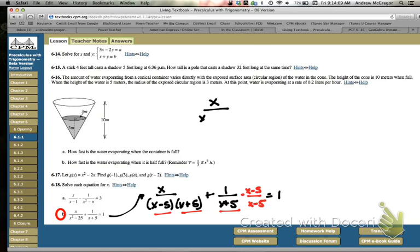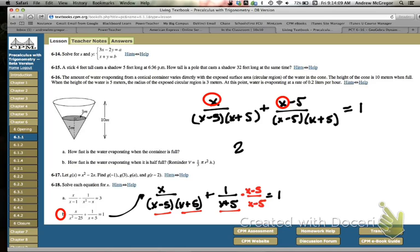If we work this out, we'll get x over x minus 5 times x plus 5 plus x minus 5 over x minus 5, x plus 5 is equal to 1. We can combine now. 2x is up top. We have our common denominators, so we can add these terms.